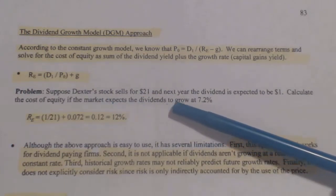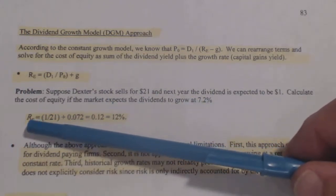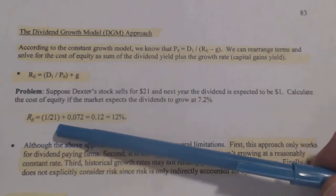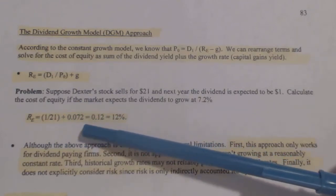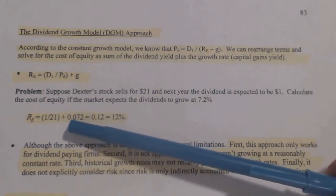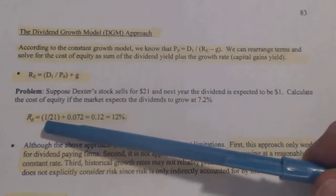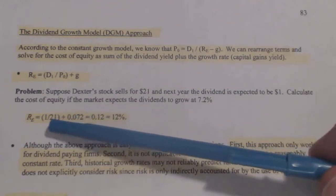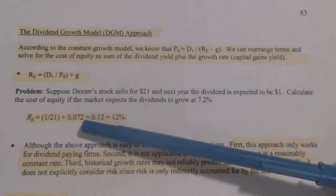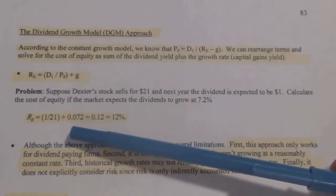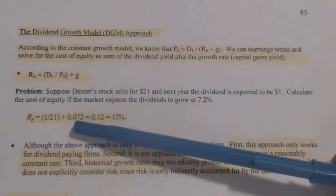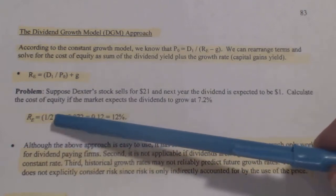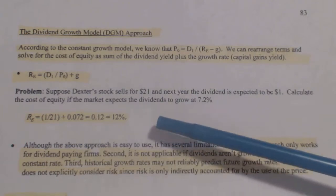Calculate the cost of equity if the market expects the dividends to grow at 7.2%. So the return for equity R_E equals dividend one divided by price at zero, plus the growth rate. Remember, the growth rate given as a percentage needs to be converted to a decimal, because both terms need to be decimals when you add them together. You don't want 7.2 mixed with a 0.05 decimal — that would come out totally wrong. Both must be decimals. That came out to 12%.